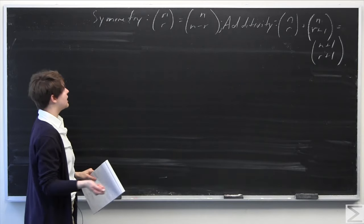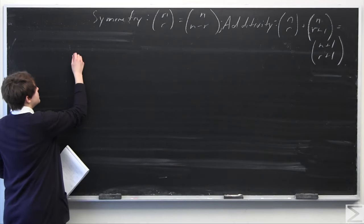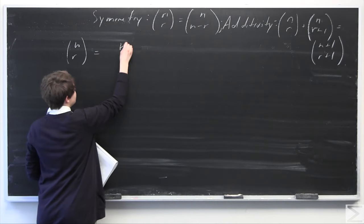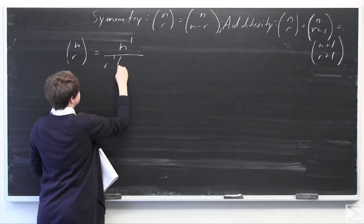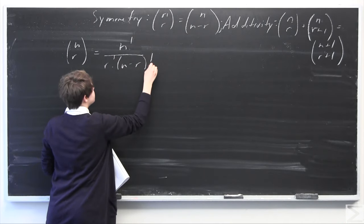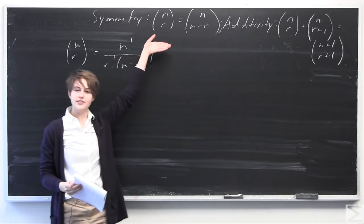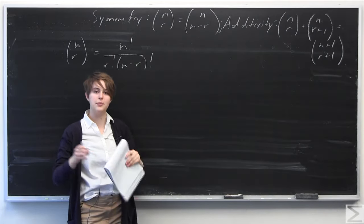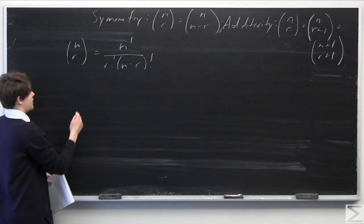To begin, we'll prove the symmetry property. We know that by definition, n-choose-r is equal to n factorial over r factorial times (n minus r) factorial. That is the left-hand side of this equality. Now we're going to look at the right-hand side and see if we can manipulate it to equal the left-hand side.